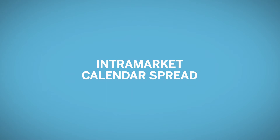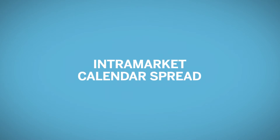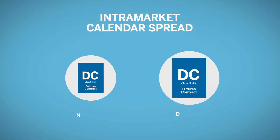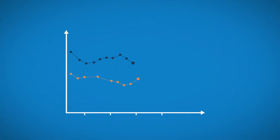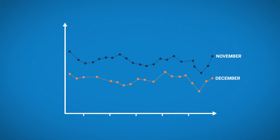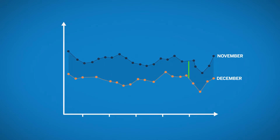An intramarket calendar spread is the combination of a long futures position and a short futures position in the same dairy product, but different contract months. One example would be the November-December Class 3 milk spread. Calendar spreads focus on changes in the relationship between the two contract months, and the goal of this strategy is to take advantage of those changes.